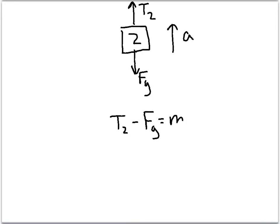Now let's look at the 2 kilogram object. Again, we have force of gravity going down. We'll call this T2 going up, and it's going to be accelerating up. So our net force equation, T2 minus FG equals MA. Rearranging, solving for T2 because we're going to need it later, we're going to have MA plus FG.